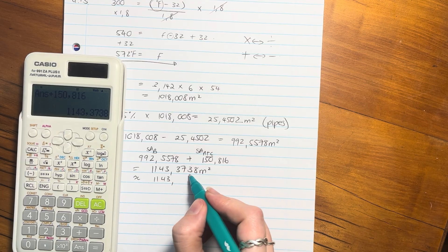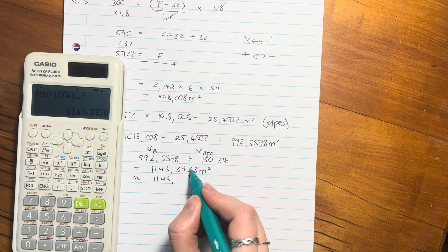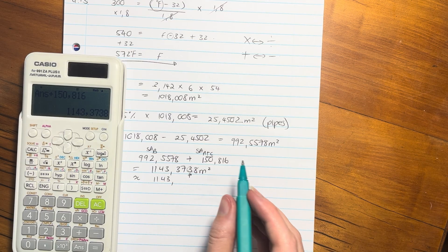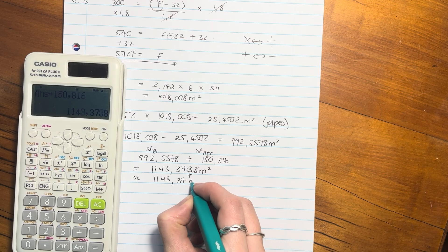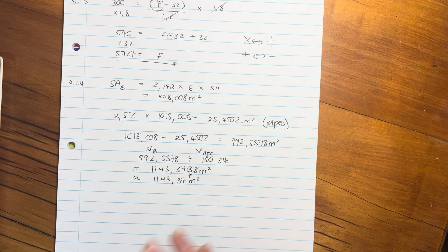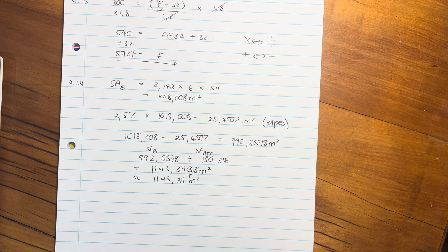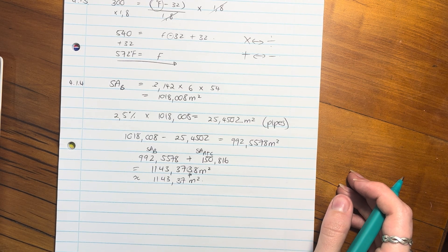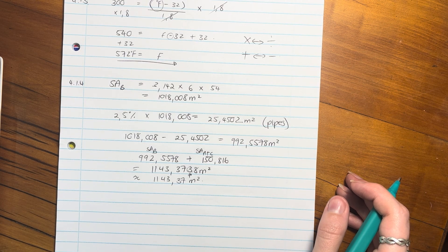Remember, when you're rounding off to two decimal places, we look at the third one. That is less than 5, so it's just going to be like this. So a lot of parts there, but if you just work through it methodically, read the question, easy enough to get. Let's move on to the next question.